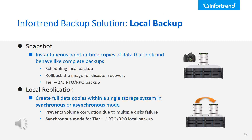Aside from third-party backup software, InfoTrain storage also supports various backup data services. Starting from the local replication solution, backup data is saved in the same storage enclosure. The first service is snapshot, which is an instantaneous point-in-time copy of data that looks and behaves like a complete backup. Since it's not actually a full backup, the snapshot can save a lot of capacity and supports scheduled settings. When data is accidentally deleted from a volume, a simple click of the snapshot image rollback button brings back the lost data.